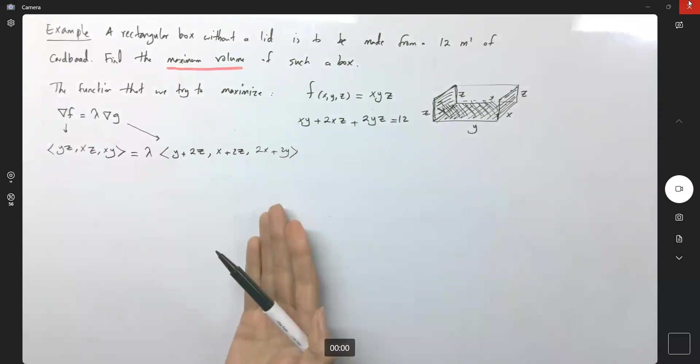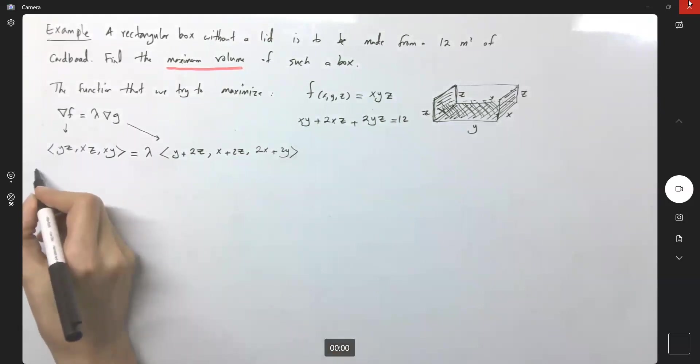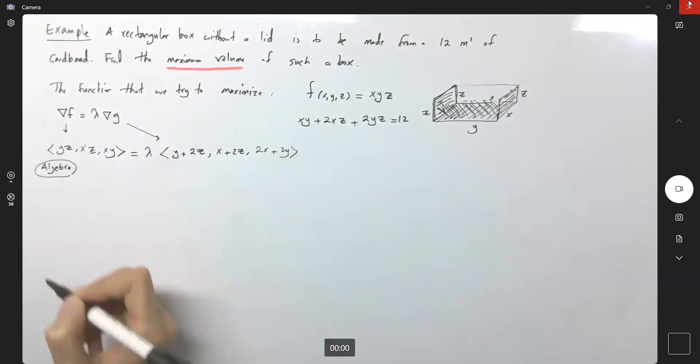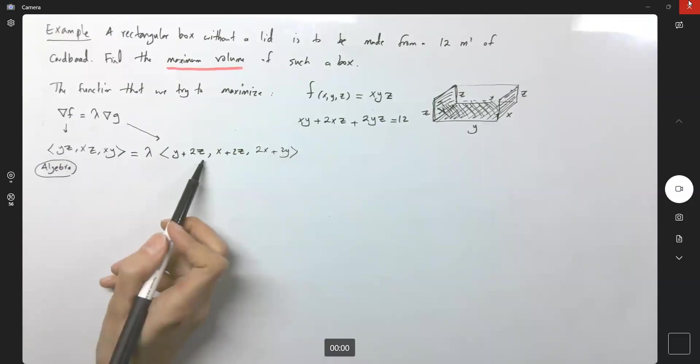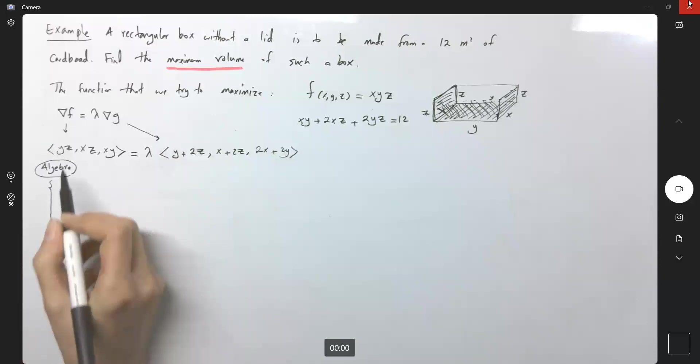So you have a system of equations. You also have this nice constraint that can help you to find x, y, and z. So take a look at this. I'm just writing algebra. Note that I'm not doing any calculus here, it's just algebra.